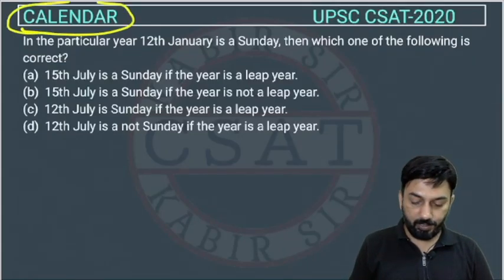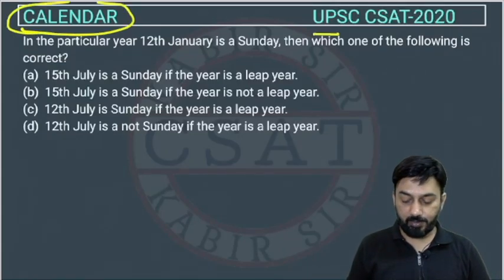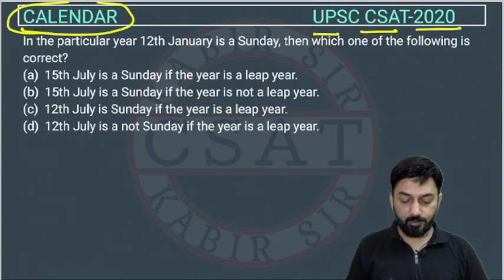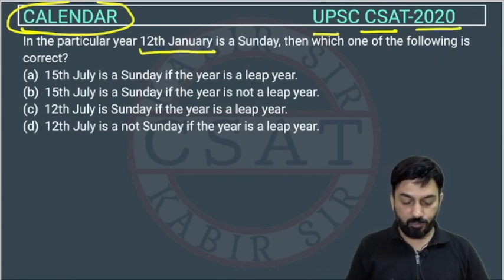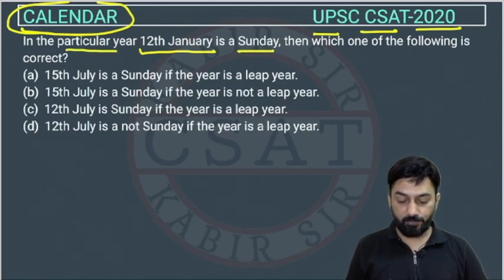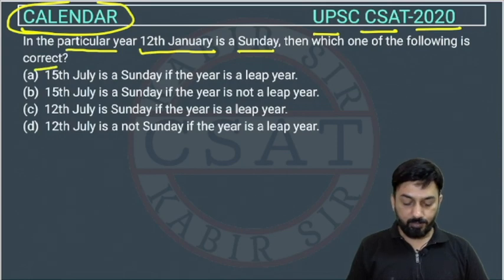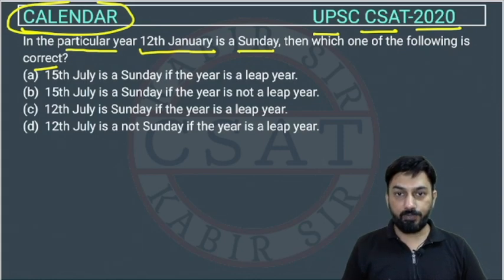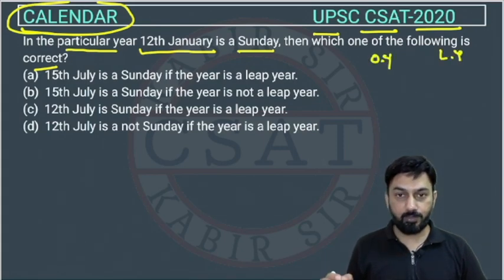This is a question from the calendar chapter asked by UPSC in their CSAT paper of 2020. In a particular year, 12th January — this question is talking about any particular year — 12th January is Sunday. Then which one of the following is correct? We don't know which year it is, whether this is an ordinary year or a leap year; this information is not given.